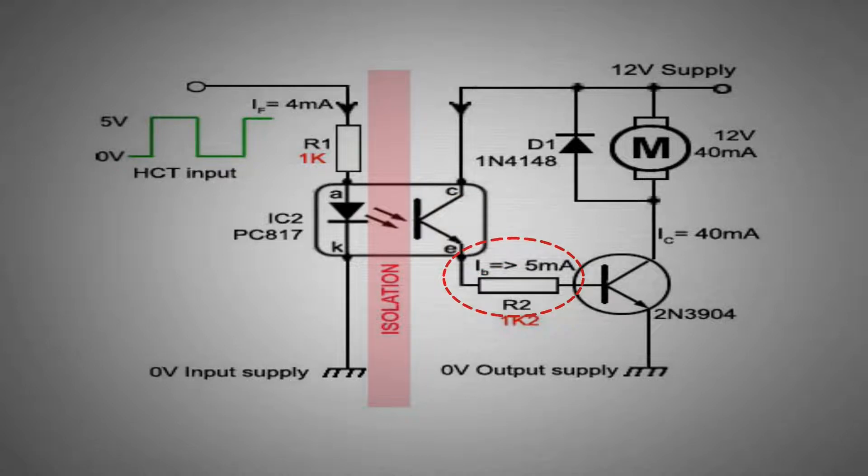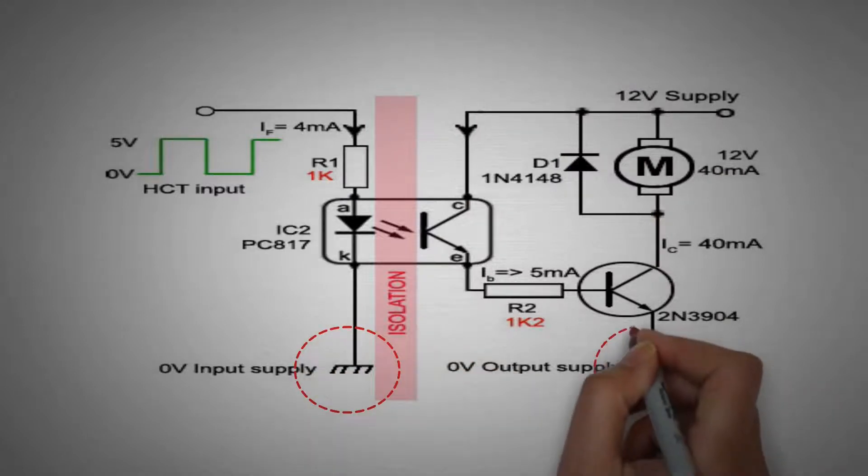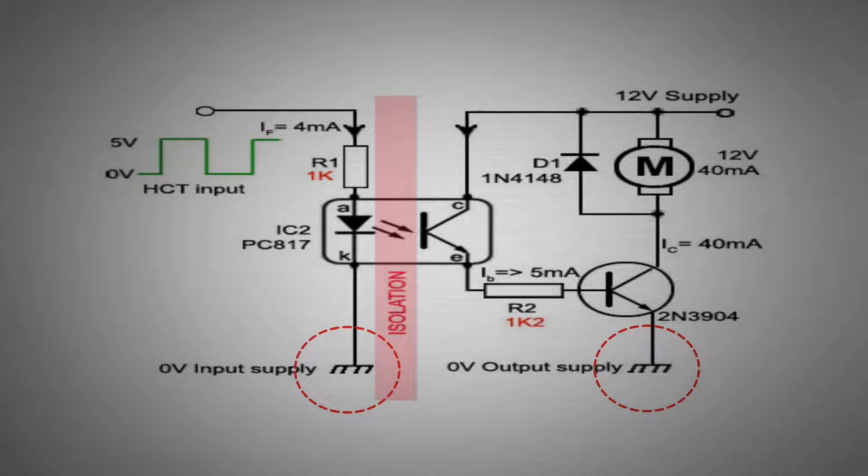The main advantage of using the opto-isolator is that it provides independent and isolated grounds. Isolating the ground path increases the stability of design and the driving digital circuitry like microcontroller or microprocessor are now safe from the high voltage spikes of the output loads.